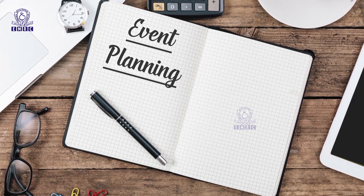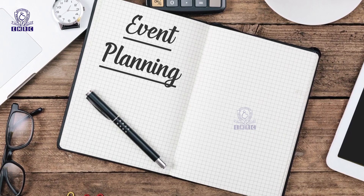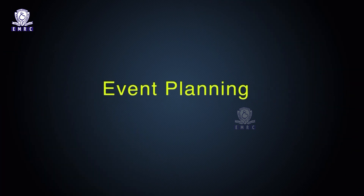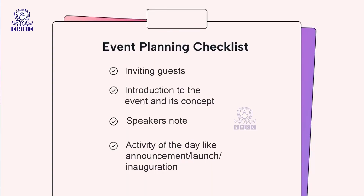For any event, one must write the script, make a workable concept and draw an event flow chart. Running or rehearsing the event flow many times before it takes off is a must — end-to-end practice is very important for a smooth flow. An event is planned based on what the client wants, plans and budget. The flow of events depends on the number of activities staged on the day: from inviting guests, introduction to the event and its concept, speaker's notes, activities like announcements, launches and inaugurations, all the way until guests leave the venue. Every activity is time-based, and movement on stage is scheduled prior to the event.